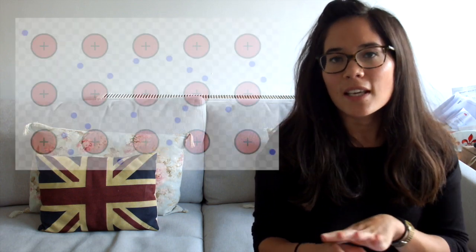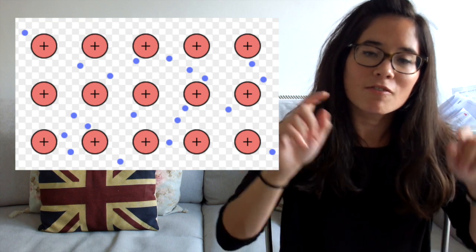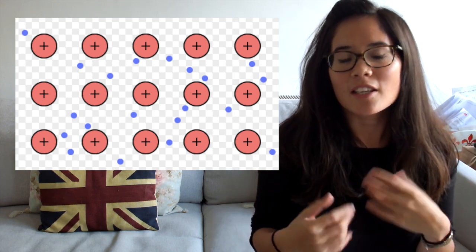Now, remember, in metals, the structures have positive metal ions, and remember they're in a really regular arrangement. They're surrounded by a sea of delocalised electrons, which just means that these electrons are free to move. The metals tend to be very strong and have high melting and boiling points, and that's because the attraction between the positive metal ion and the negative electrons are very, very strong, so they're difficult to break.